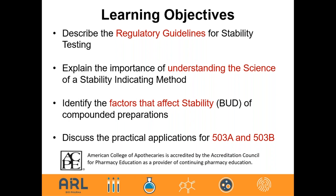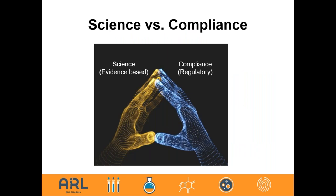We're going to look at factors that affect stability and also look at some practical examples and applications for the 503A and 503B. This diagram illustrates the thought process behind this talk: when you have evidence-based science combined with the regulatory or compliance aspect, you have an ideal world. Ultimately, you want a scientific, evidence-based stability study combined with compliance to meet ideal conditions for quality and control — ensuring that you're delivering a safe and effective product to that patient, which is the ultimate goal.